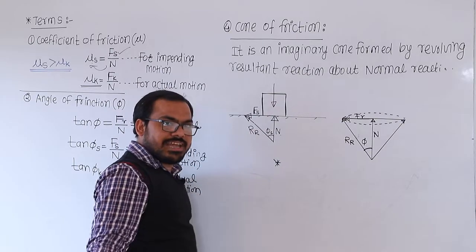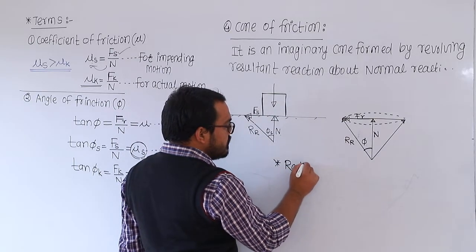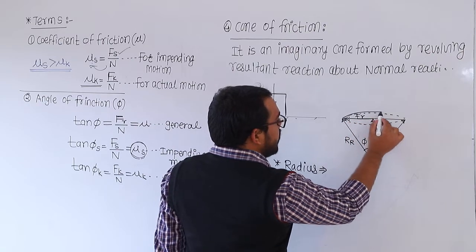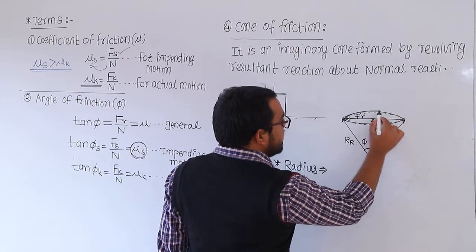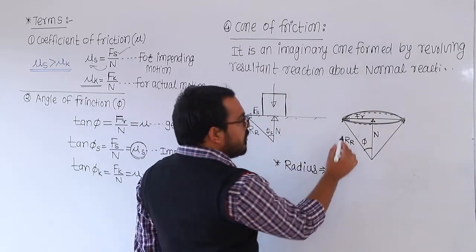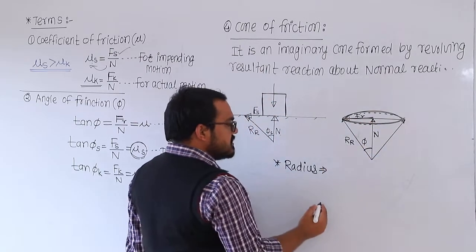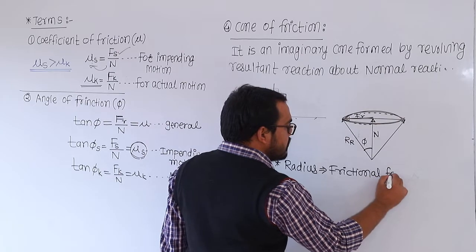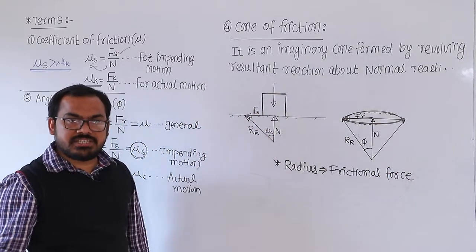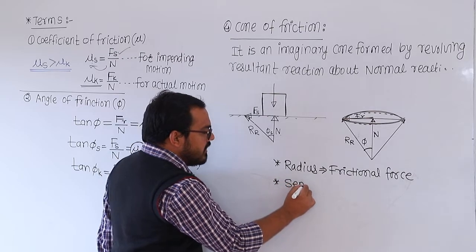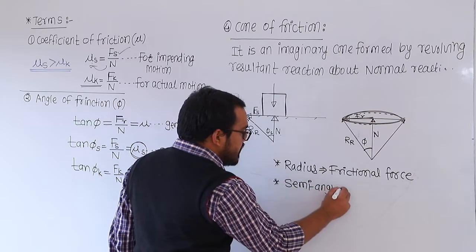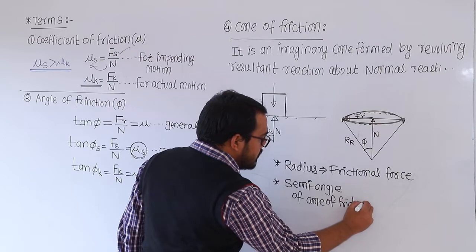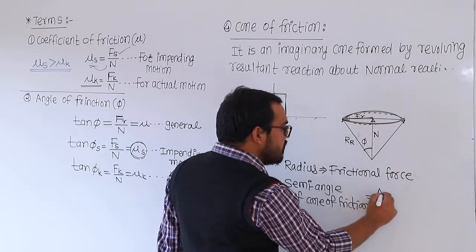Based on this cone of friction, there are related questions such as: what is the radius of the cone of friction? The radius corresponds to the circular base of the cone, and that radius is the frictional force. The semi-angle of the cone of friction is phi, the angle of friction.